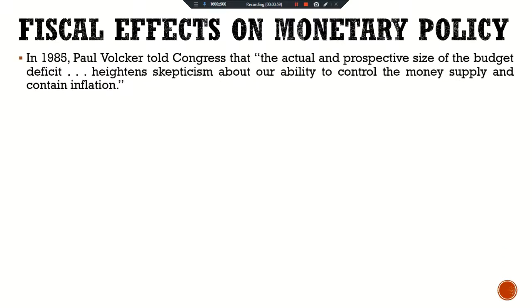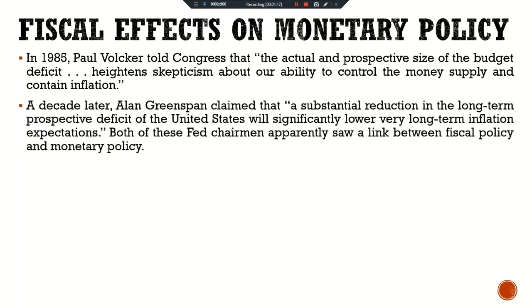Dear scholars, in 1985, Paul Volcker told Congress that the actual and prospective size of the budget deficit heightened skepticism about our ability to control the money supply and contain inflation. A decade later, Alan Greenspan claimed that a substantial reduction in the long-term prospective deficit of the United States will significantly lower very long-term inflation expectations. Both of these Fed chairmen apparently saw a link between fiscal policy and monetary policy.